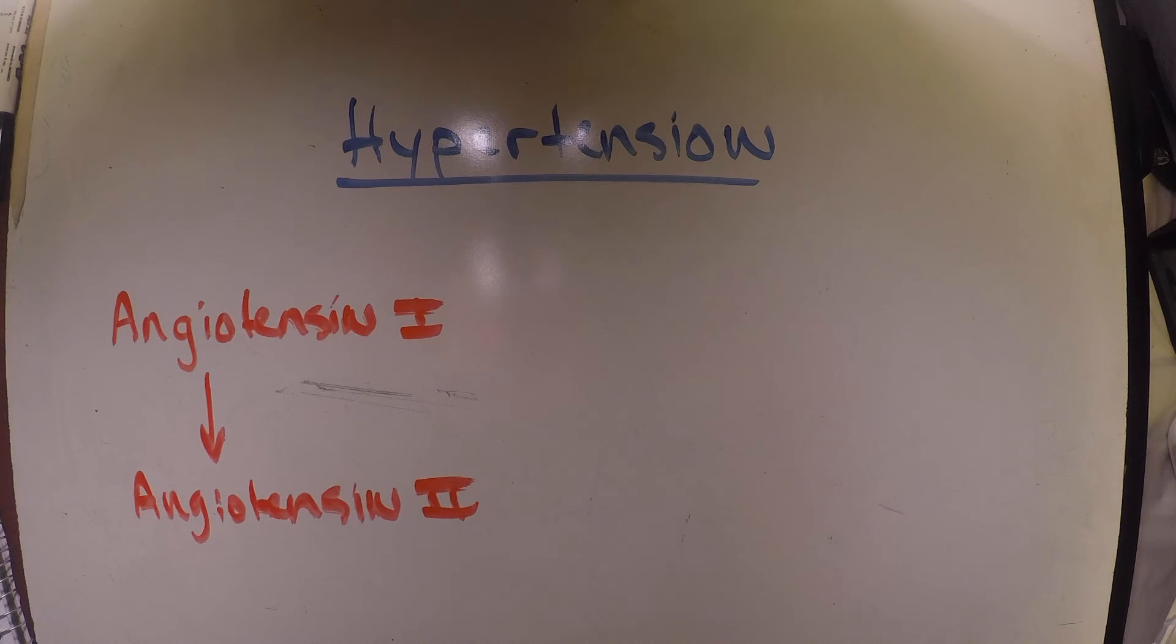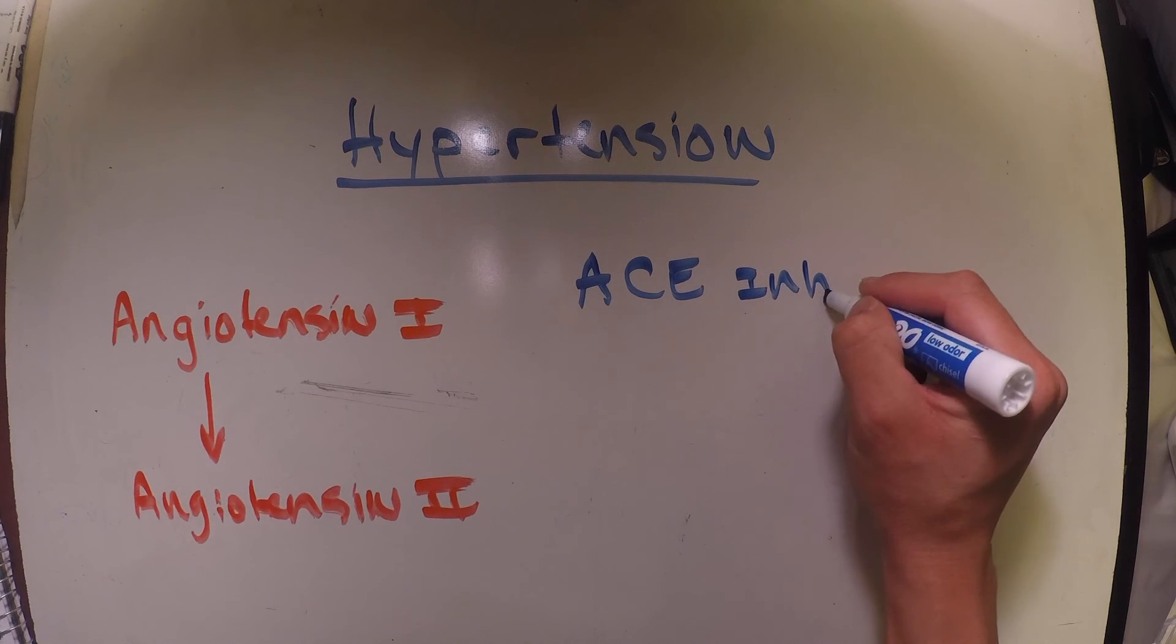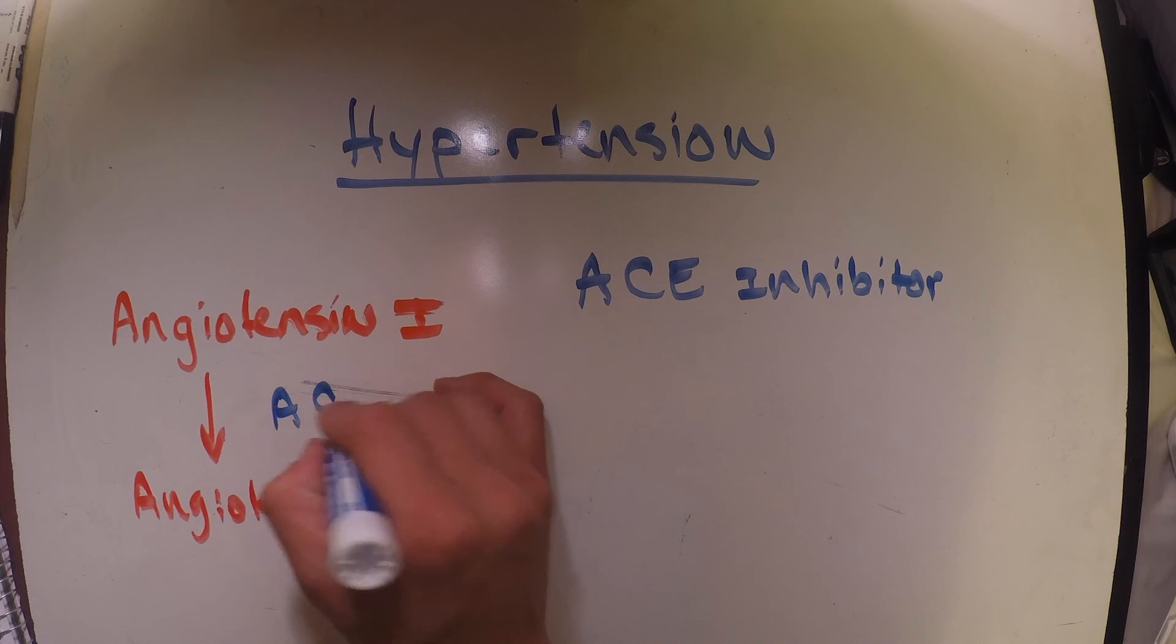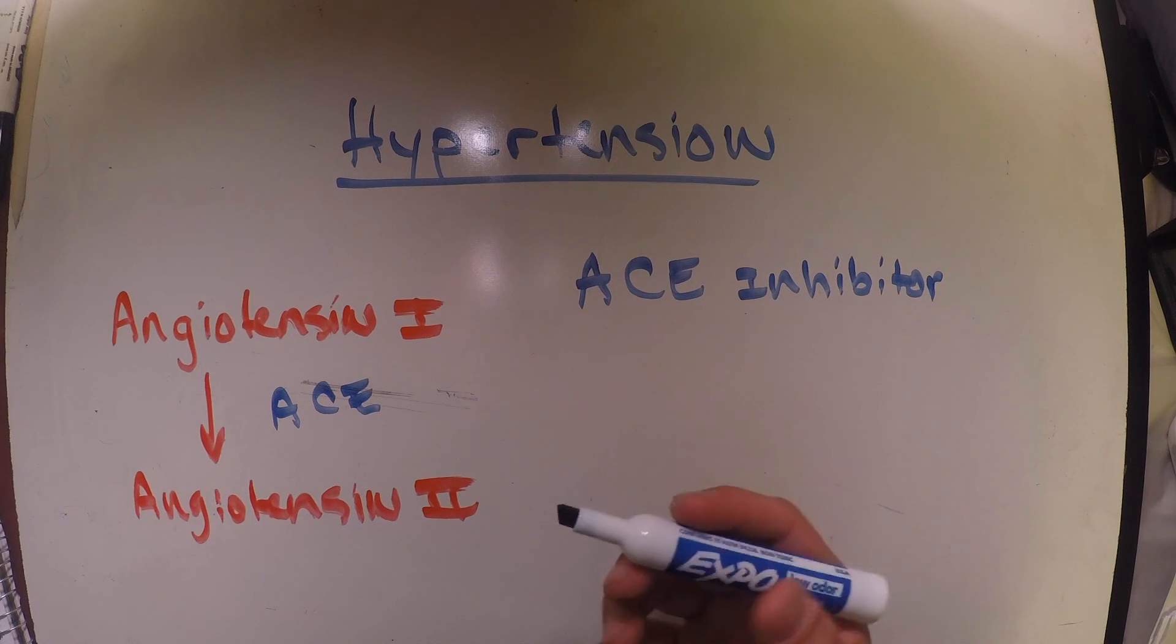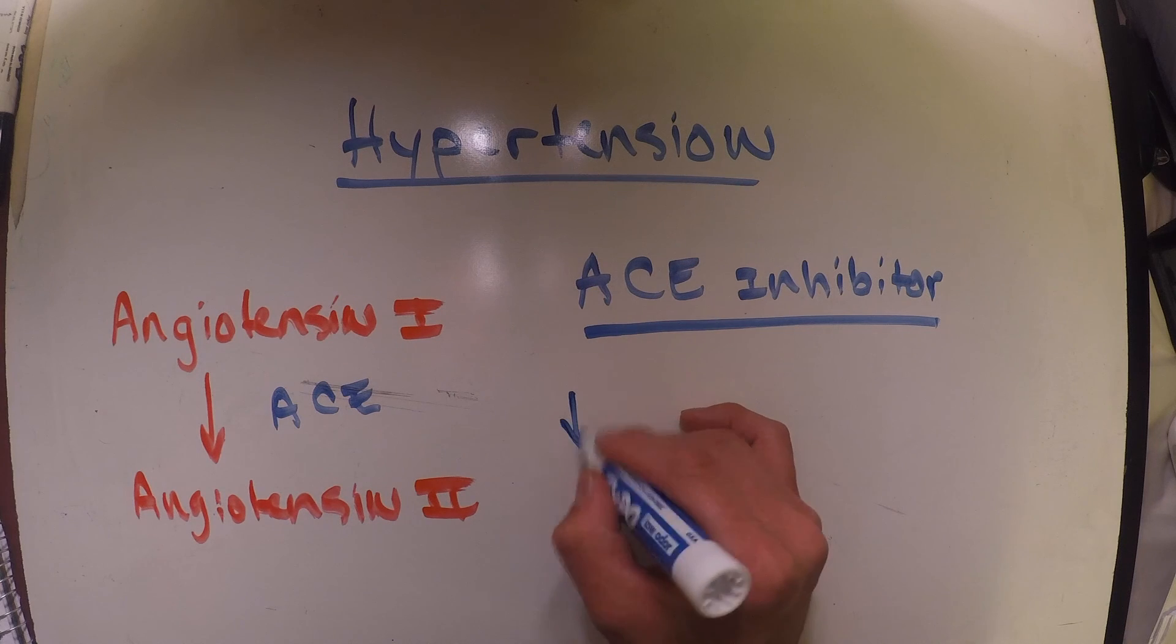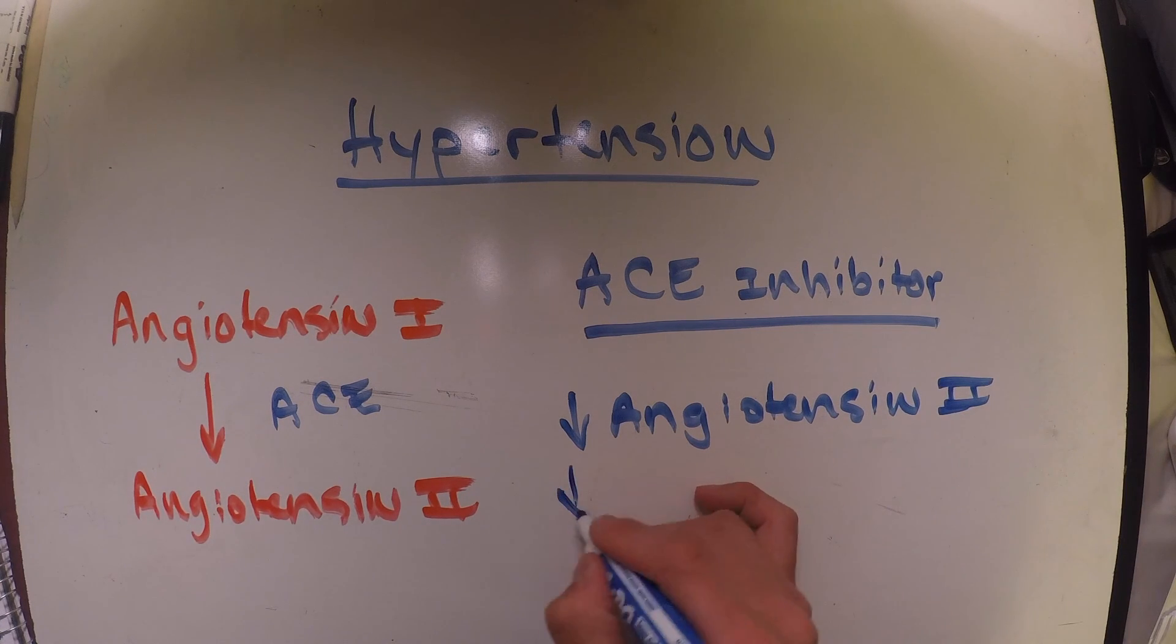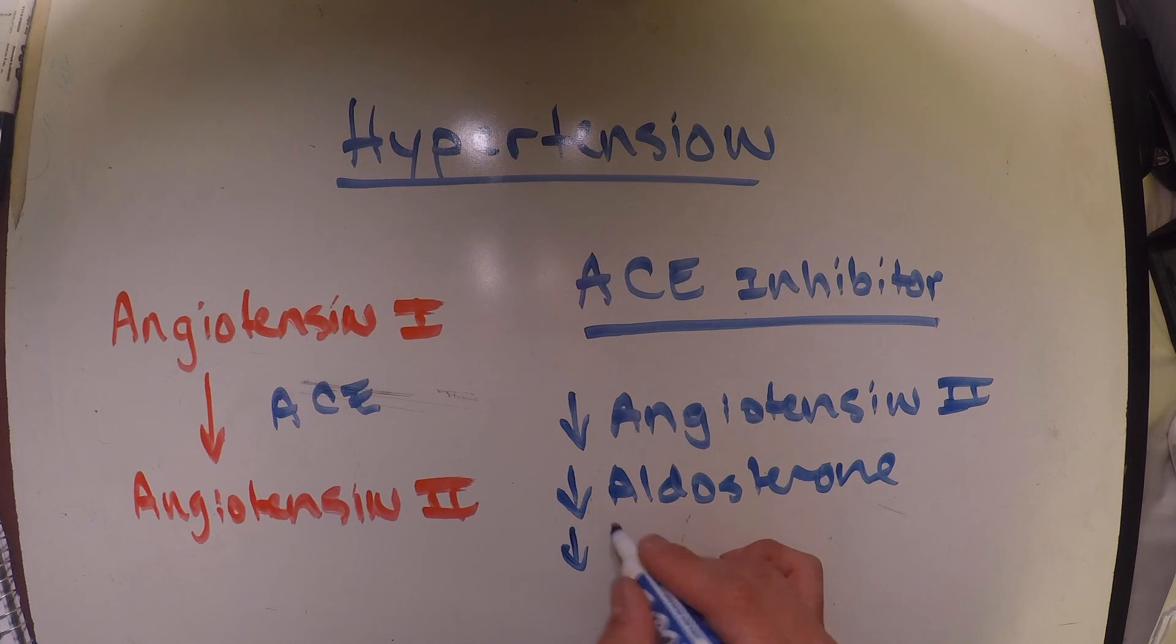The physician will oftentimes give them something known as an ACE inhibitor. This ACE inhibitor is going to prevent that angiotensin-1 converting enzyme from working. We know that that ACE enzyme is going to convert our angiotensin-1 into our angiotensin-2 so that our angiotensin-2 can force smooth muscle contraction. So if we're given this ACE inhibitor by our physician, what that's going to do in turn is decrease the amount of angiotensin-2 we produce, which is going to decrease the amount of aldosterone released, and it's also going to in turn decrease our blood pressure.